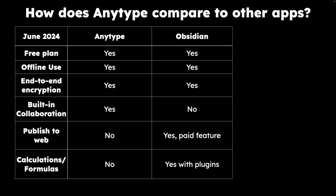Obsidian does have a publish to web feature, kind of like publishing your notes to become a publicly available website, and that is a paid feature. They do have calculations and formulas, however you will have to use plugins — which are basically add-on software — to have that functionality.